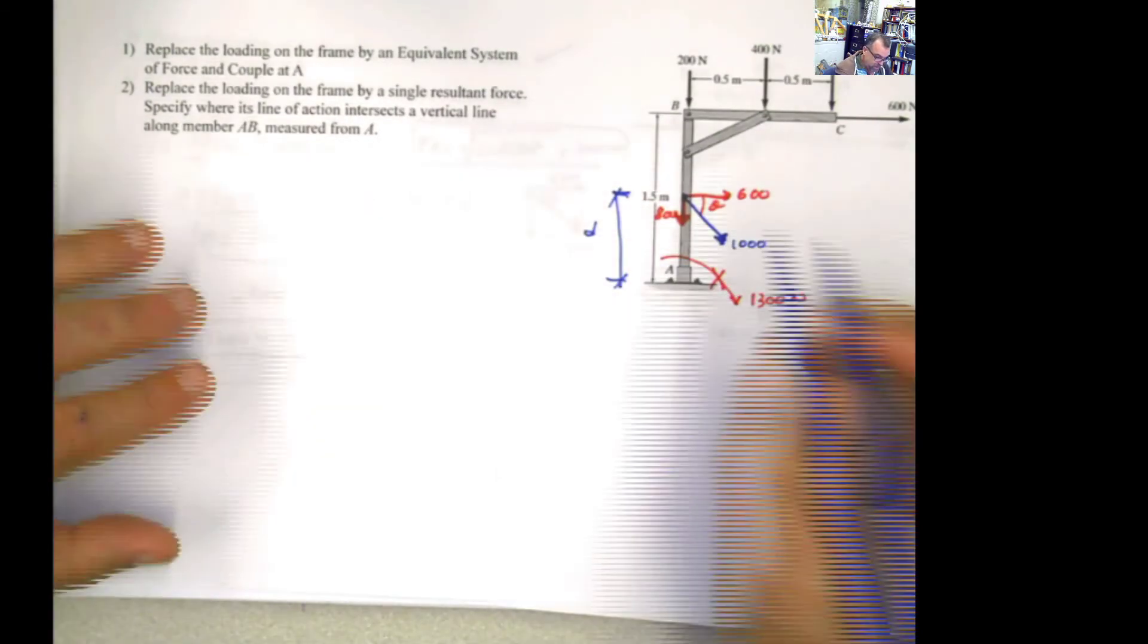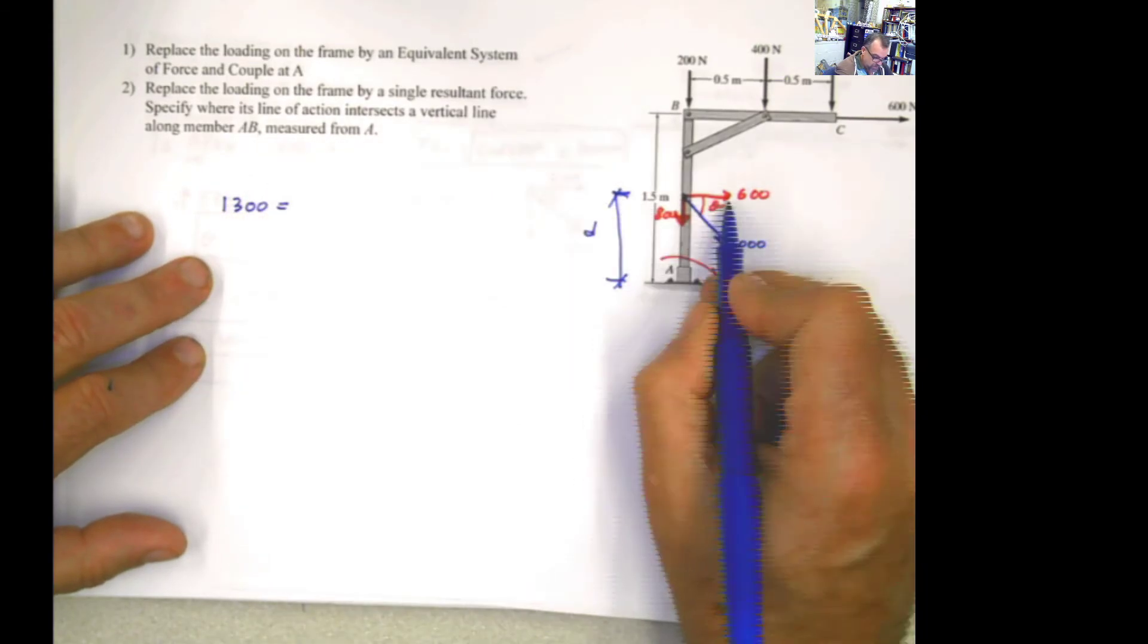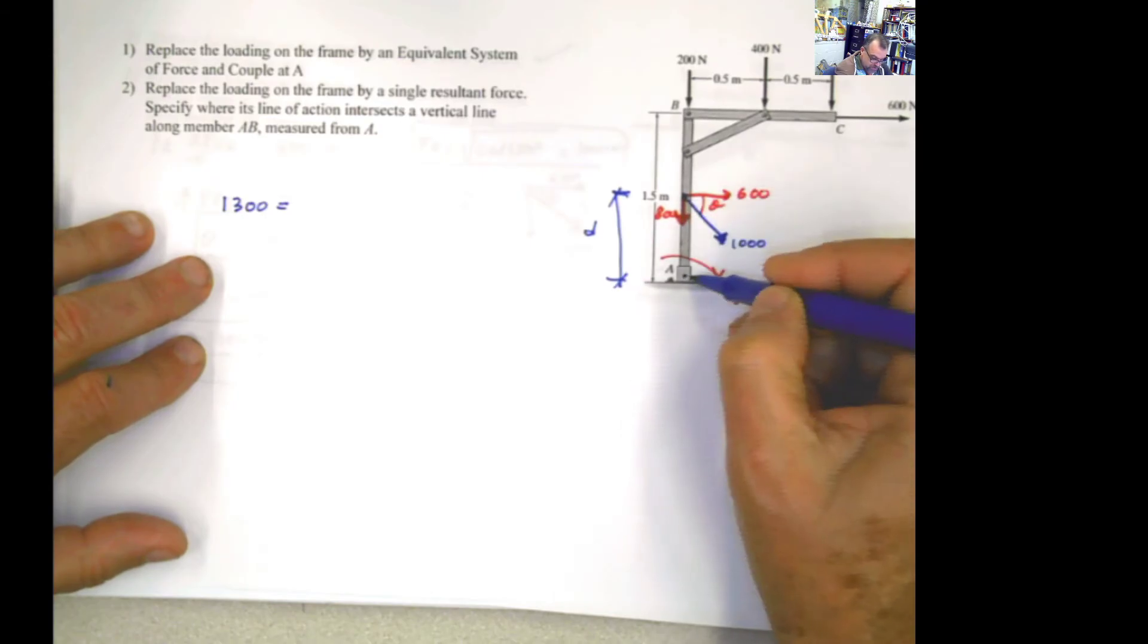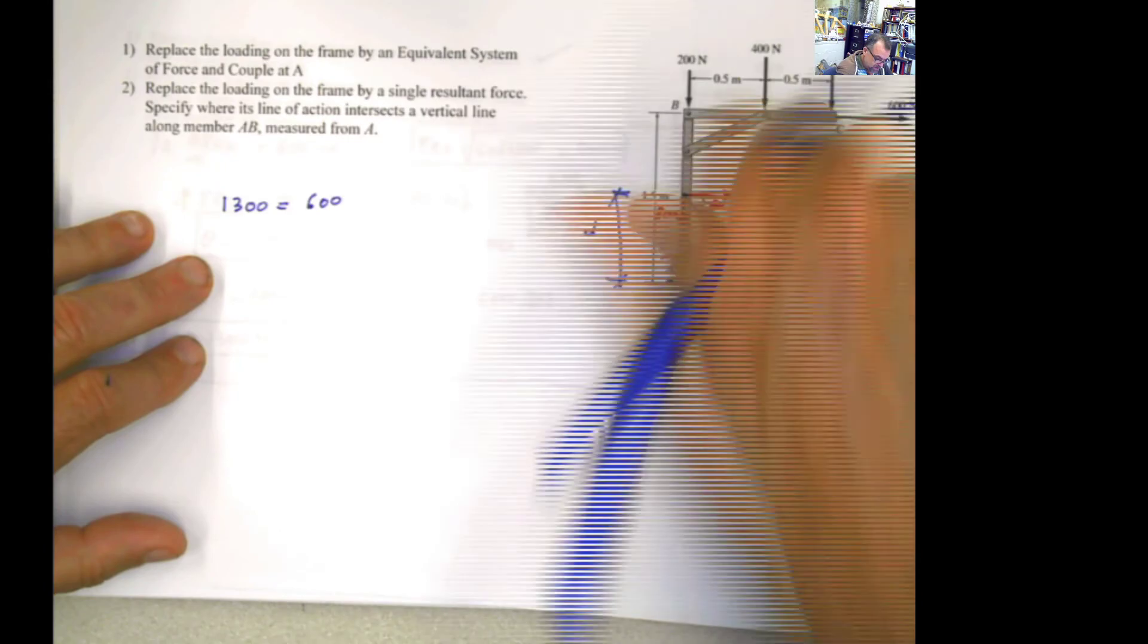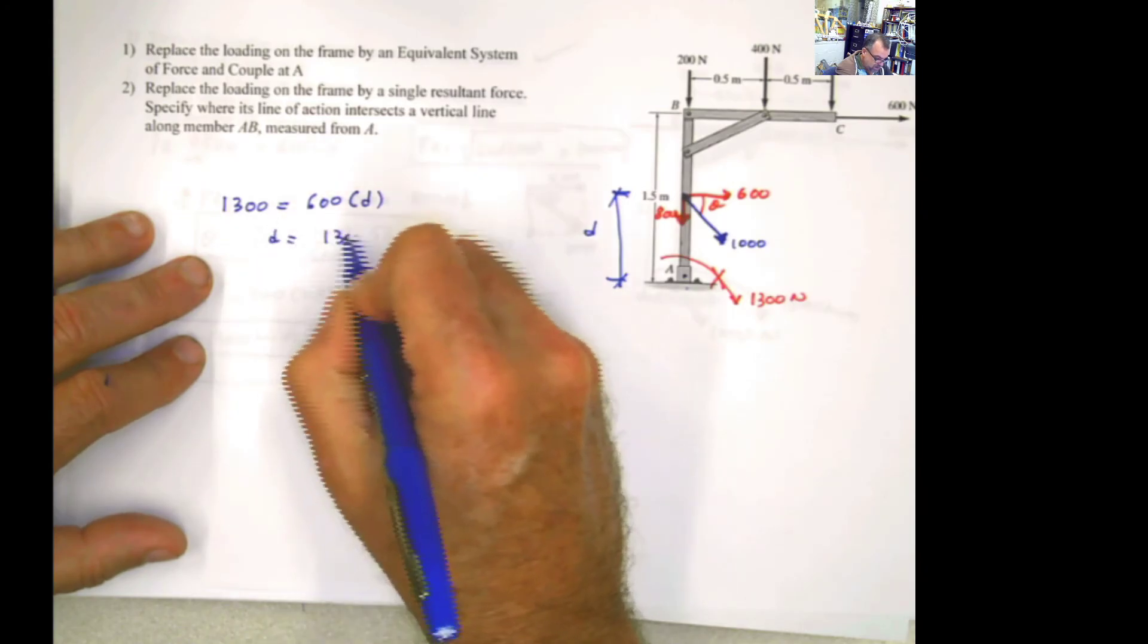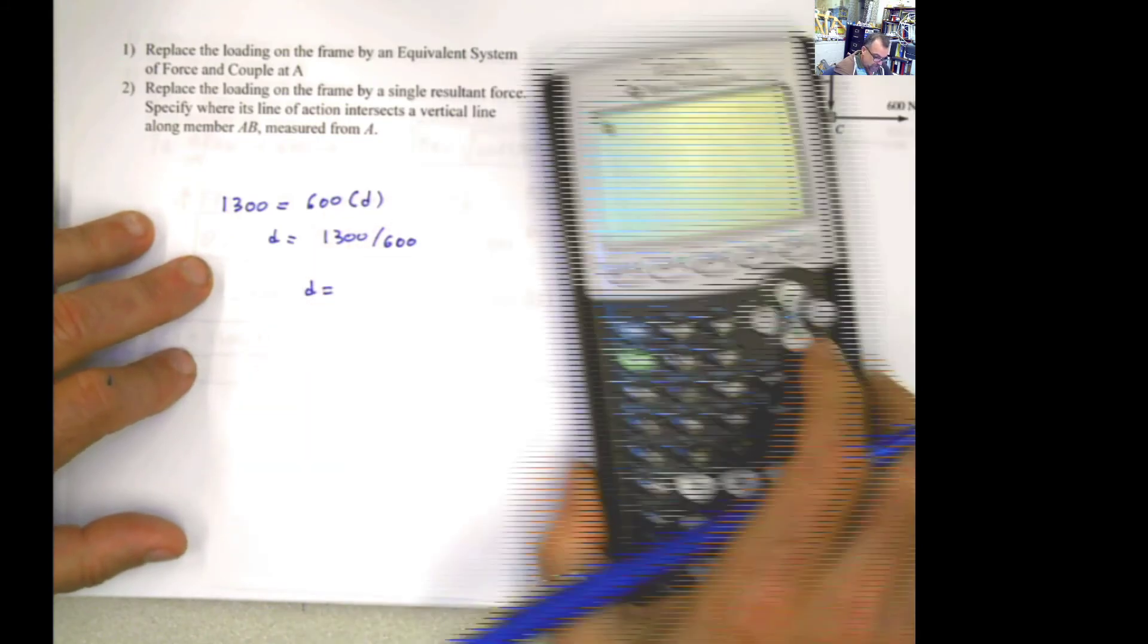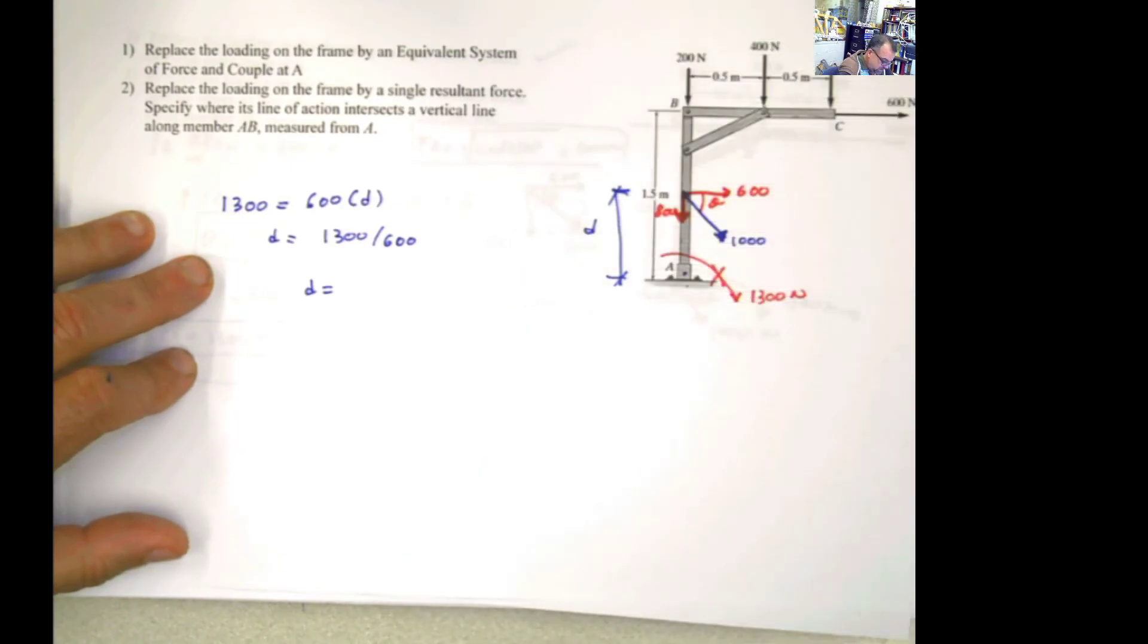And if you follow what I just told you, and you translate that into equation, is that that moment has to be equal to this component, because this component passes through that point. It's not producing anything or through that line. So it's going to be equal to that 600 multiplied by this distance, D. And then from there, you can solve for D and say that 1,300 divided by 600. And that distance, D, will be 1,300 divided by 600, 2.16 periodic.